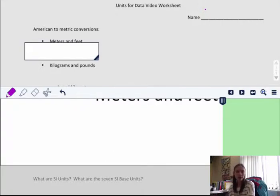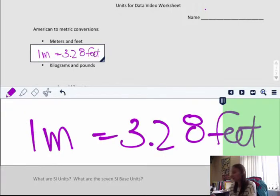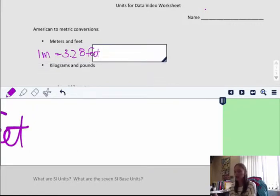The first thing we're going to look at is the difference between some American units and some metric conversions. We're looking at meters and feet. One meter is equal to 3.28 feet, which means if you've got a meter stick, it's about the same thing as a yard. A meter and a yard are very similar because a yard is 3 feet.